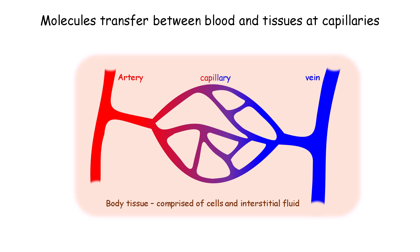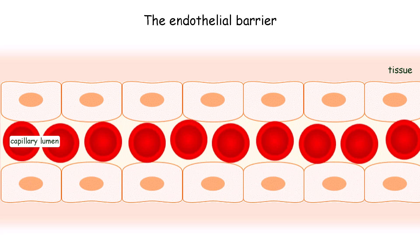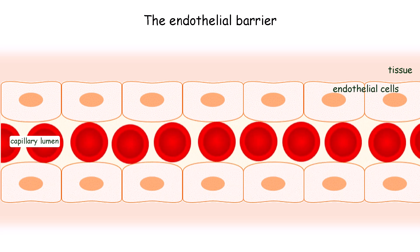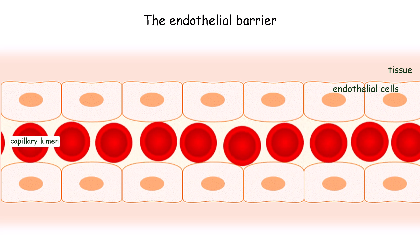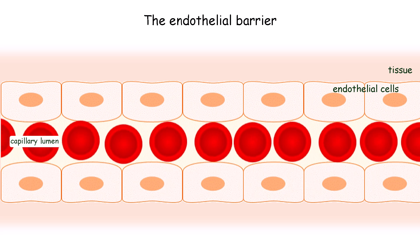Molecules travelling in the circulation are dissolved in blood. Blood flows through arteries to capillaries, which form a network of fine vessels throughout all of the body's tissues. As blood leaves the capillaries, it enters the veins to be circulated back to the heart. Capillaries are the site at which solutes and fluid can transfer between the blood and the tissue. Capillaries are lined with a monolayer of endothelial cells, which act as a barrier to prevent the loss of blood into tissues and limit what can cross between blood and tissues.